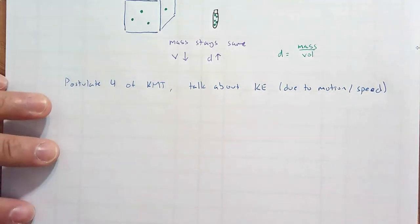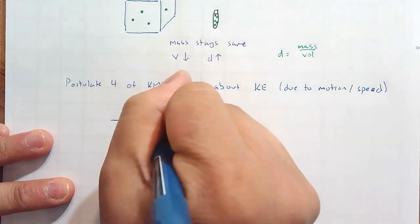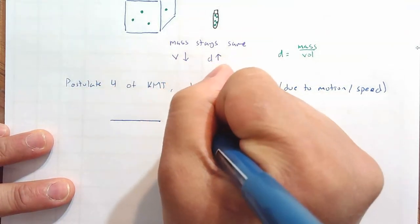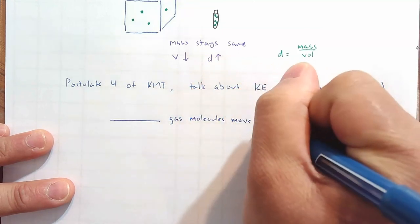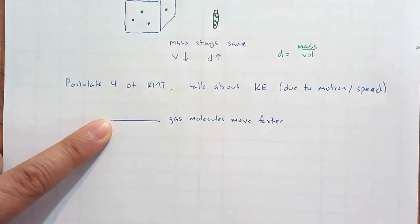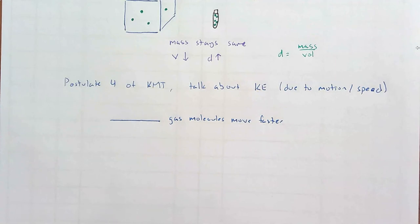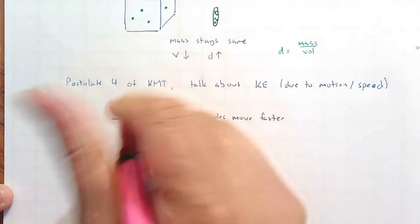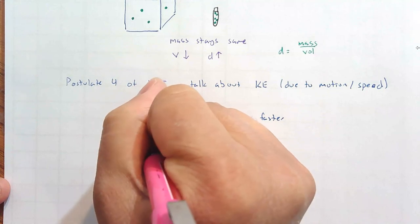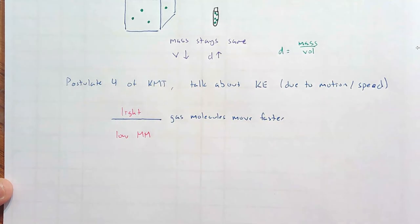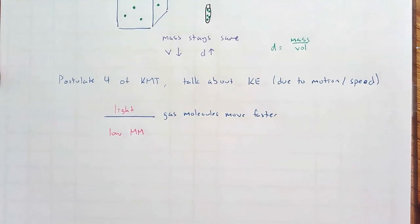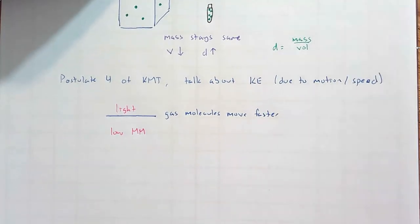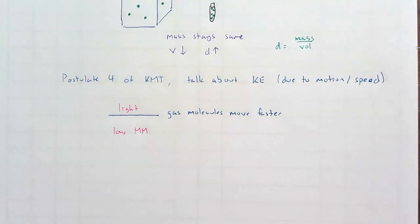But going into that video, I want us to know that blank gas molecules move faster. Is it going to be light molecules or heavy molecules? Light gas molecules move faster. So light, so that's a low molecular, or we'll call it molar mass. And in the next video, we're going to put big MM as molar mass in an equation that we will derive. Okay. I will see you in the next video. We will talk about speed and molar mass.